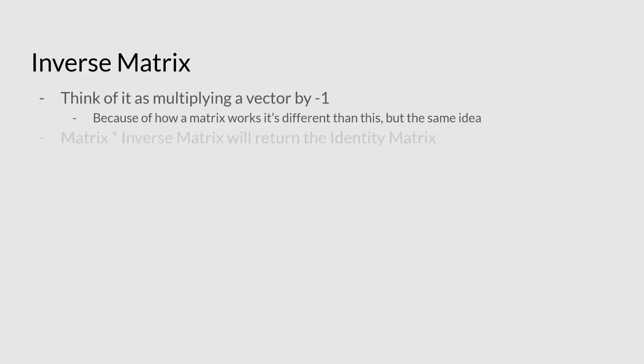One thing to be aware of is what's called the inverse matrix. Now, the inverse matrix, you can think of it as the same as when we multiply a vector by minus one, we basically get the negative version of that vector. It's different in terms of it's not as straightforward as just doing multiply by minus one. But the same idea applies that if we take the matrix, and we multiply it by the inverse matrix, it will return the identity matrix. So basically, they will cancel out. Just as if you have a vector, and you add the negative vector of that, they're going to cancel out.